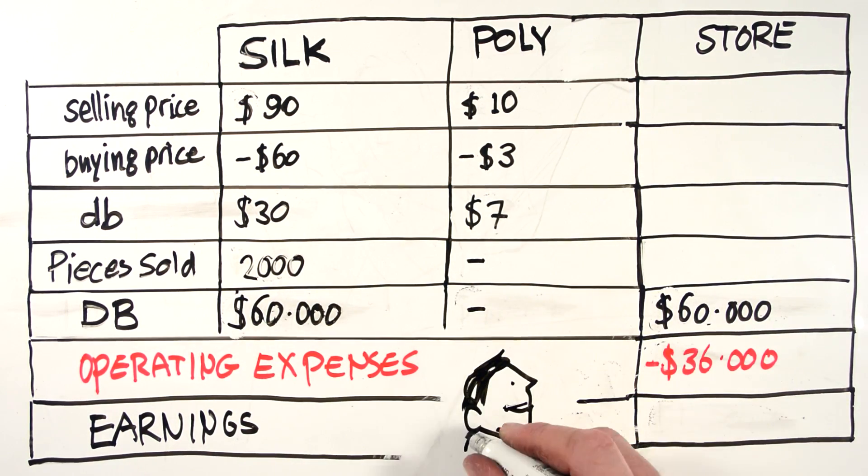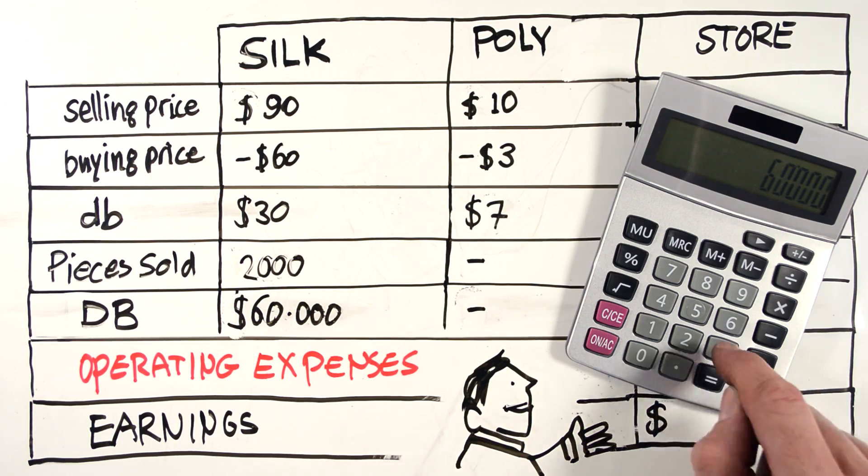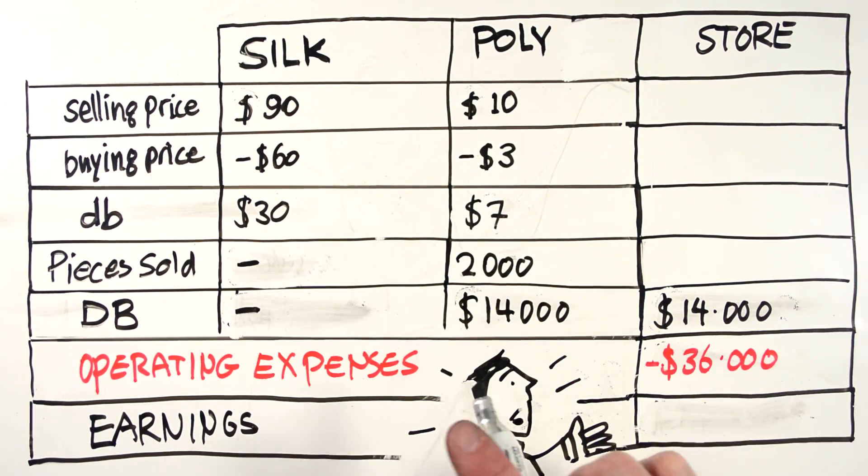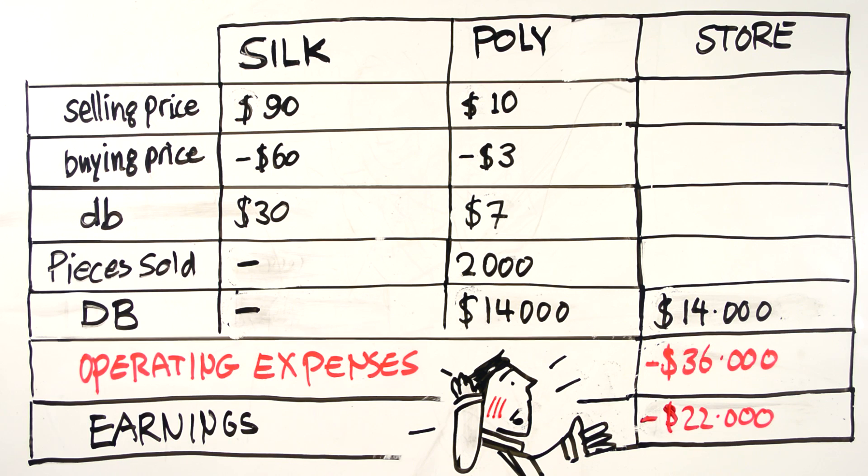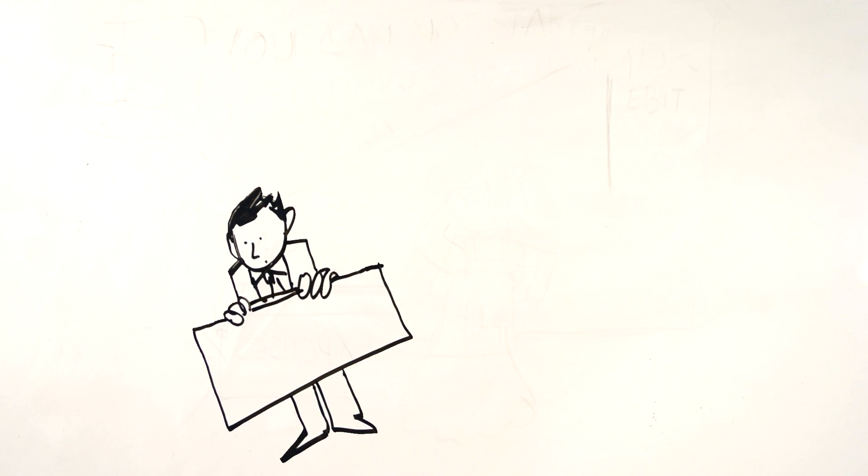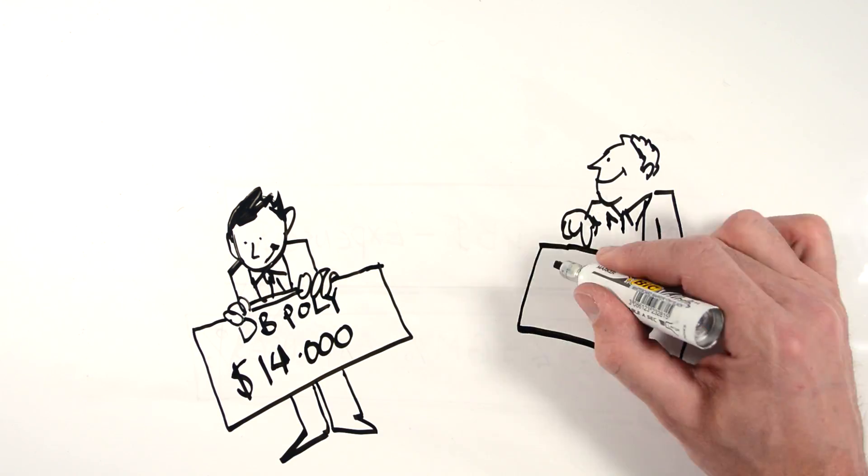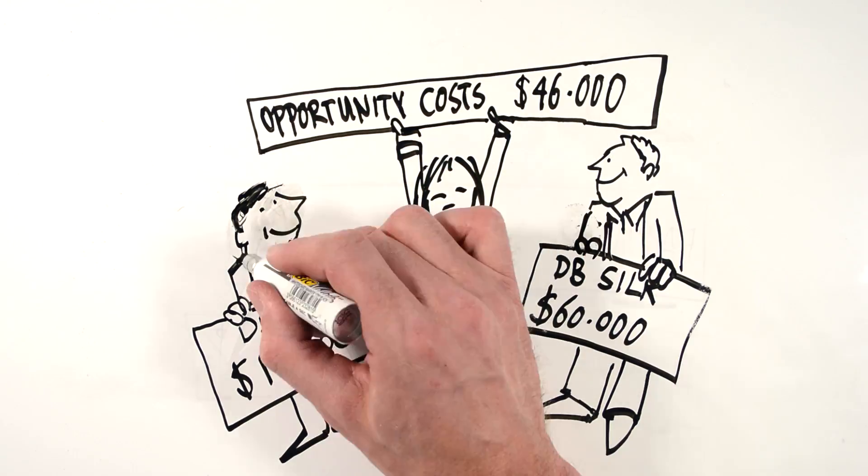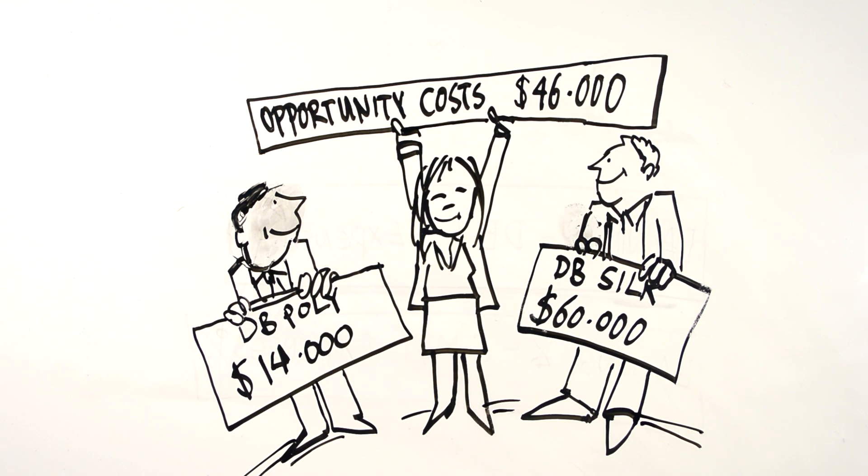Here we see that a pure silk assortment results in earnings of $24,000 compared to a loss of $22,000 with a polyester assortment. If we choose to stock only polyester instead of silk, we'll incur an opportunity cost of $46,000. The difference in dekkungsbeitrag flows through directly to the bottom line.